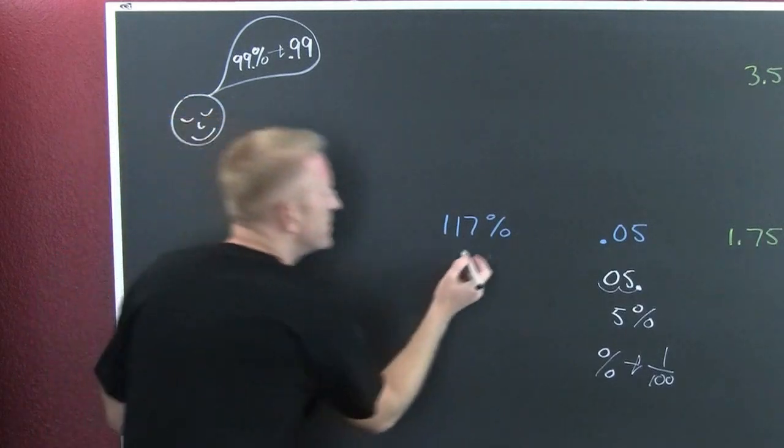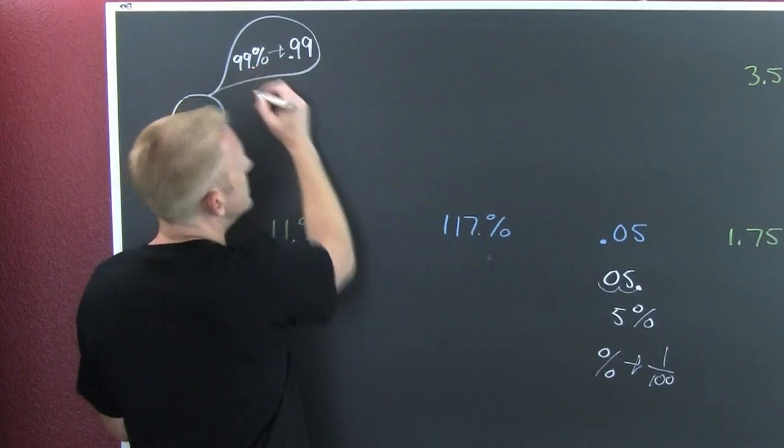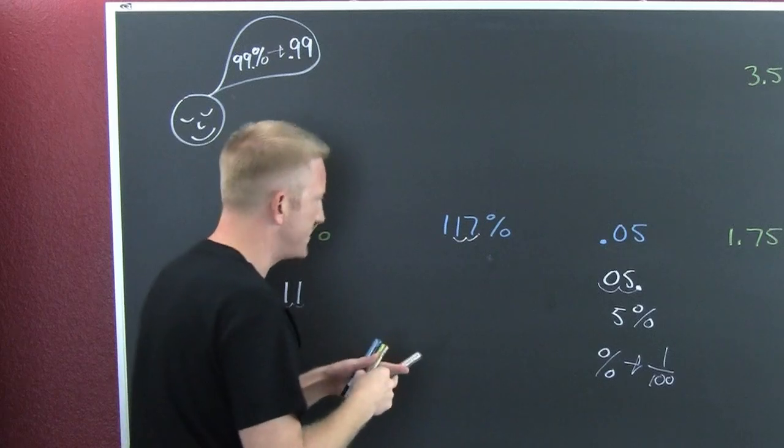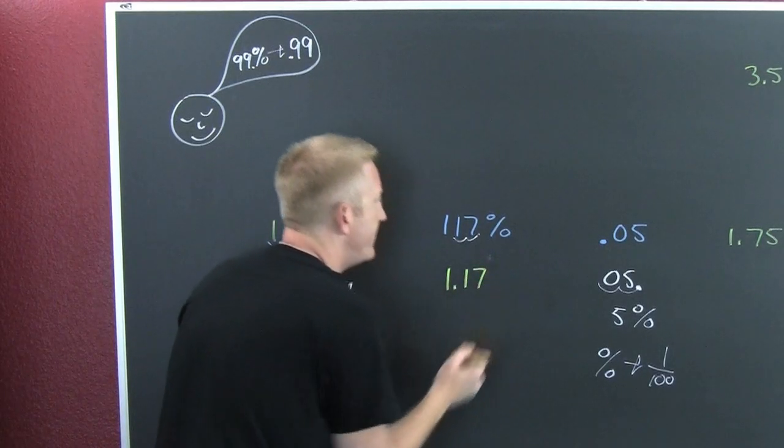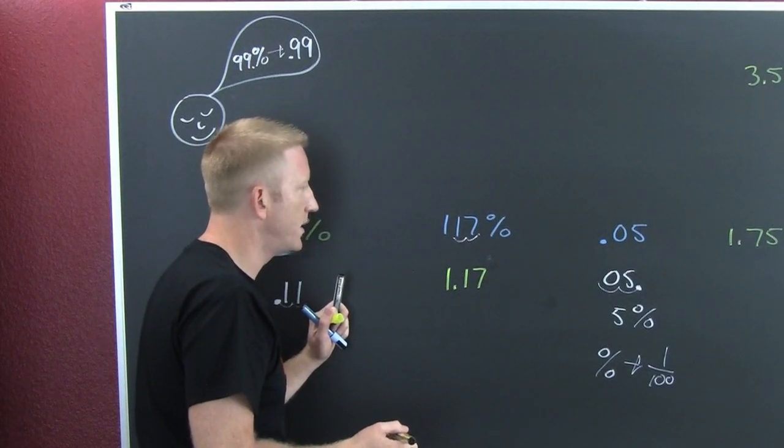Shall we? So here's my decimal place. Which way do I want to move it? I want to move it one, two to the right. And 117% is the same as saying 1.17 as a decimal. Good times? Good times.